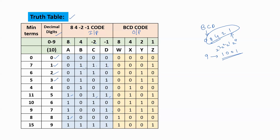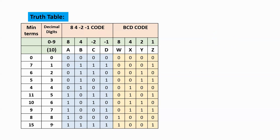An easy way to write the 8-4-minus2-minus1 code for digits 0 to 9 is to split into two parts: 0 to 4 is the first section, and 5 to 9 is the second section. For the first section, the leftmost MSB is filled with all 0s. For the second section, the leftmost position is filled with all 1s. These are fixed values, and based on them we fill the remaining positions.